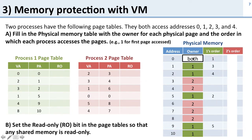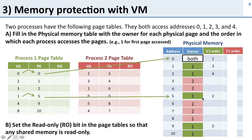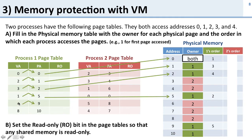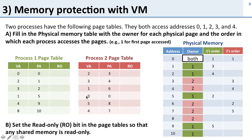Now let's look at the order in which they access memory. The programs access virtual addresses 0, 1, 2, 3, then 4. For process 1: virtual address 0 → physical 0 (first), virtual 1 → physical 5 (second), virtual 2 → physical 1 (third), virtual 3 → physical 2 (fourth), virtual 4 → physical 9 (fifth). For process 2: 0 maps to 0, 1 maps to 6, 2 maps to 3, and so on.